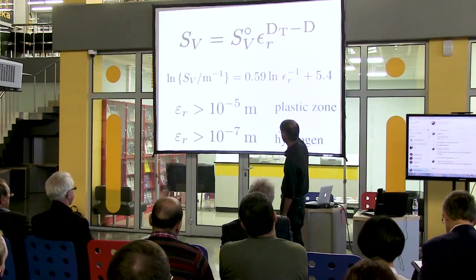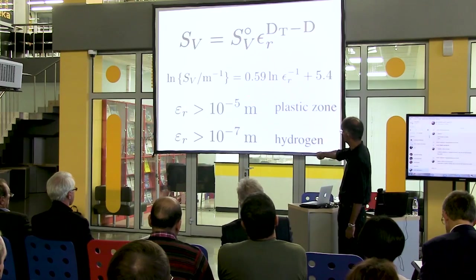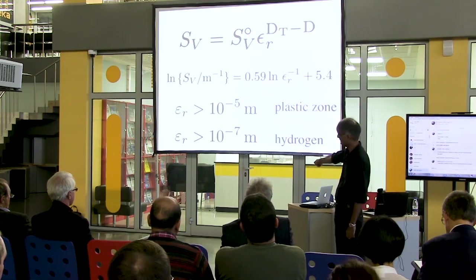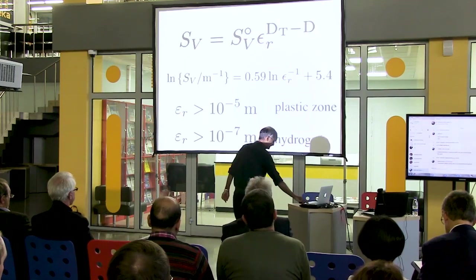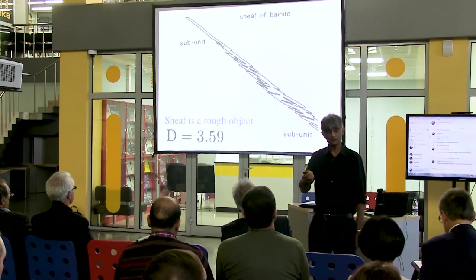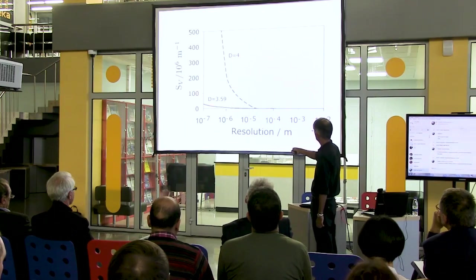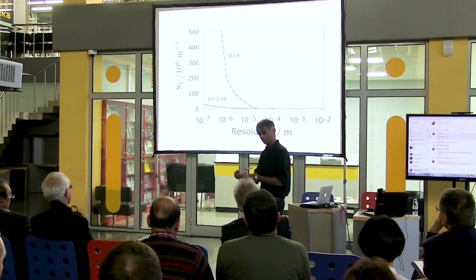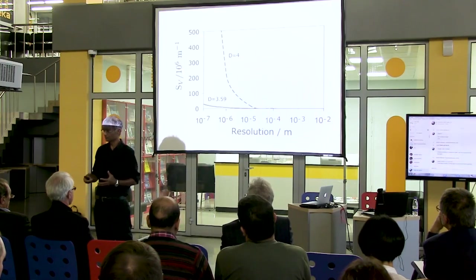Если взять штангенциркуль меньшего размера, можно более точно измерить периметр, в отличие от штангенциркуля с большим шагом. Логарифм от разрешения и получается прямая линия — вот это и есть фрактал. Можно рассчитать периметр как функцию от любого разрешения. Мандельброт об этом говорил. По бейниту мы выполнили такую же работу, и оказалось, что площадь поверхностного интерфейса — это функция от разрешения. Если нужно измерить пластическую зону, здесь берём 10 микрометров в качестве разрешения. Площадь межфазной поверхности по водороду предусматривает другую величину. Если бы поверхность была полностью плоской, значение составляло бы ровно 4.